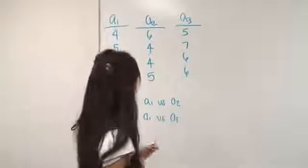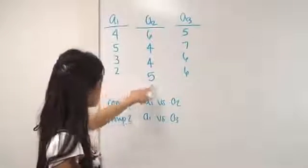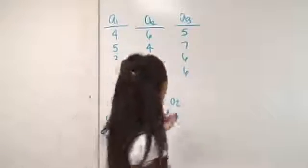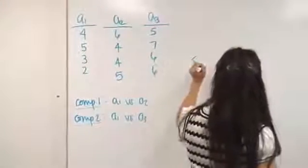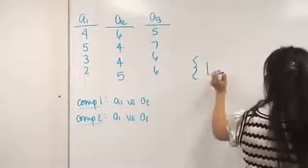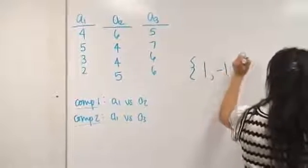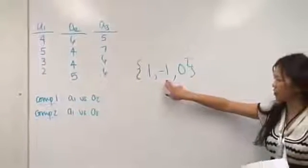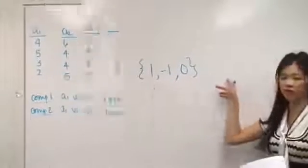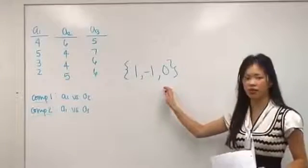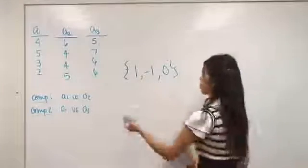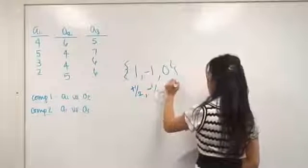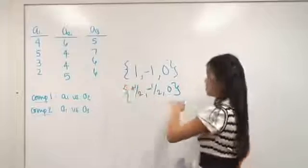For example, if I'm doing A1 versus A2, all my coefficients need to add up to zero. For my first comparison, I'm going to assign A1 a value of 1, A2 a value of minus 1, and A3 a value of 0. What this means is that I'm comparing A1 to A2, and 1 plus negative 1 is 0. So these coefficients, like I said, are arbitrary. You could also do plus one-half, minus one-half, 0 — however you want to assign them, as long as they equal zero.